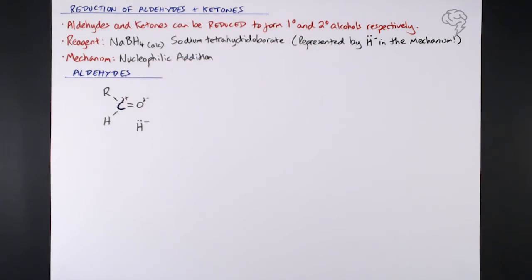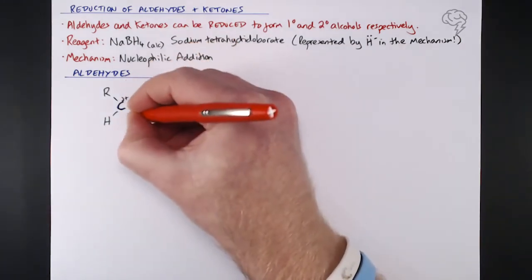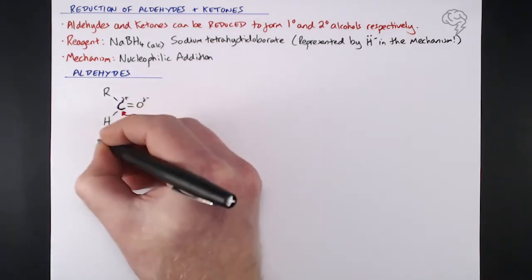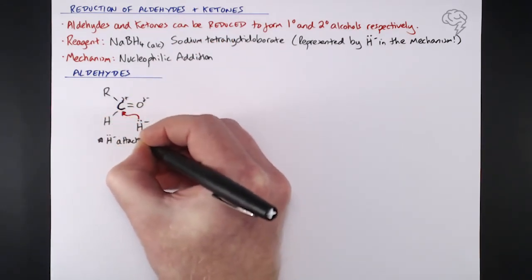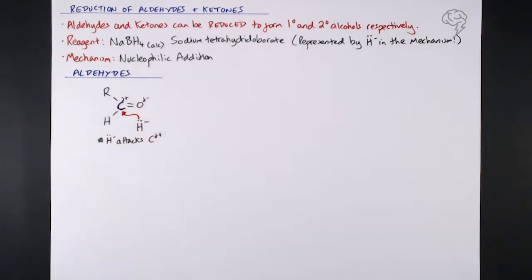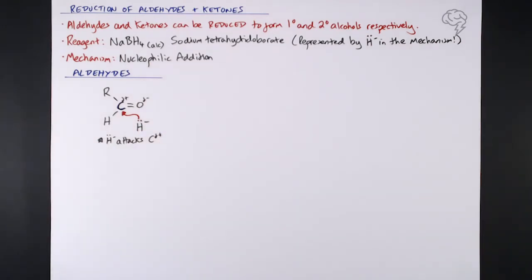The first part of this mechanism is the H minus that attacks our delta positive carbon. That's our first curly arrow - the movement of that pair of electrons on the hydrogen to that delta positive carbon.